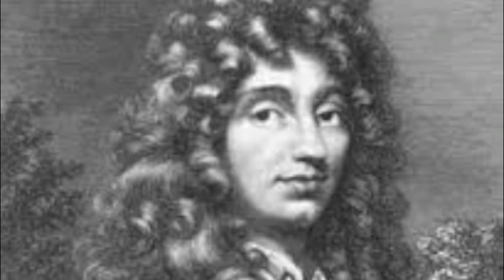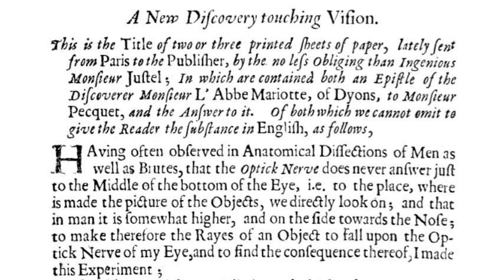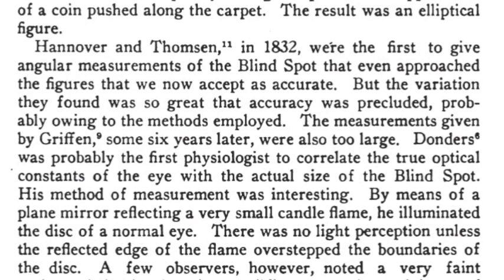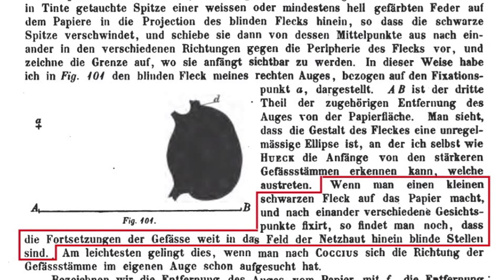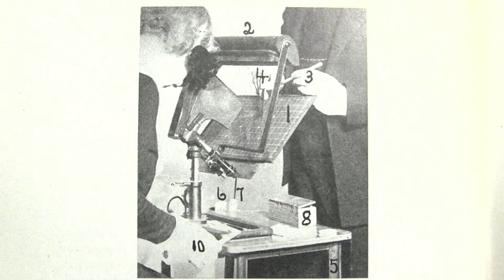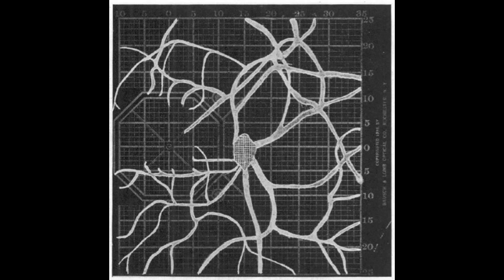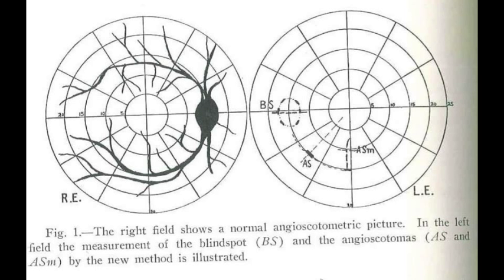The French physicist Edme Mariotte reported on his discovery of the blind spot in 1668, but it wasn't until the 1800s that attempts were made to determine its exact shape and size. In 1840, the German anatomy professor Alexander Friedrich von Hoik published a drawing of the extent of the blind spot, showing the stubs of the larger blood vessels. In 1867, the German physician and physicist Hermann von Helmholtz published a similar drawing and noted that you could locate blood vessels some distance from the blind spot. Dr. John Evans did just that in the early 1900s and published a book in 1938 on clinical applications of this technique of mapping what are often called angioscotomas.